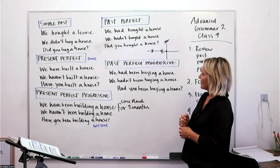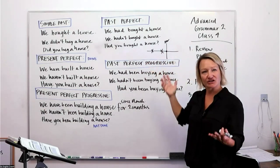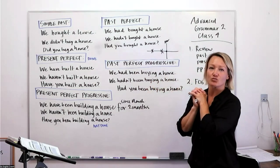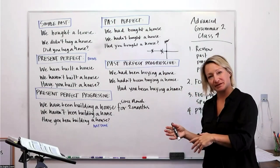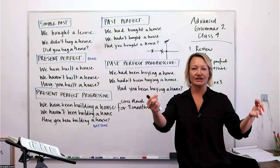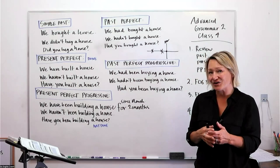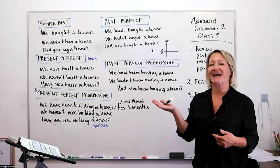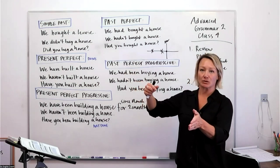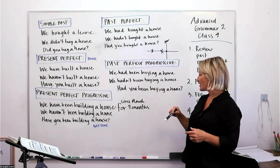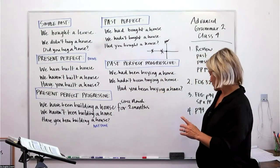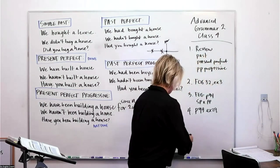'We had bought a house.' 'We hadn't bought a house.' 'Had you bought a house?' Then past perfect progressive: 'We had been building a house — and then something happened.' With most progressive tenses you're talking about something that started, continued, and then something happened in the middle. For example: 'We had been working to buy a house, and the market crashed.' 'We hadn't been buying a house.' 'Had you been buying a house?'